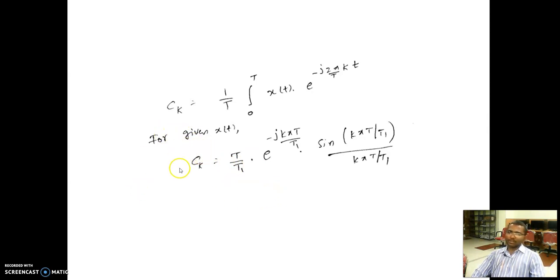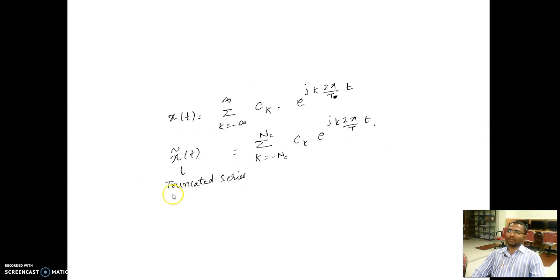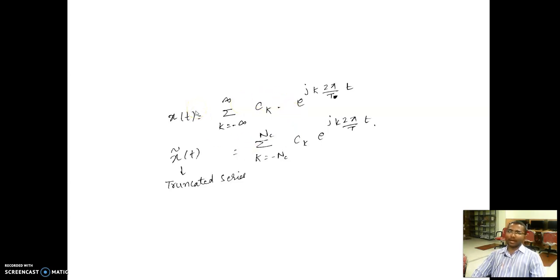Now let us plot the values of c_k with respect to k — the magnitude spectrum and phase spectrum separately. I also want to reconstruct the signal with a truncated series, meaning I will use only fewer values of k instead of k equal to minus infinite to infinite. I will consider only 2Nc plus 1 number of values in reconstructing the signal x-tilde of t. There will definitely be an error due to this truncated series, given by the second norm of the difference of x(t) and x-tilde of t, squared. Let us move on to the MATLAB simulation.